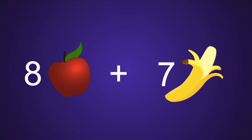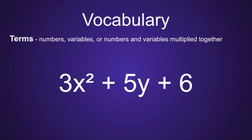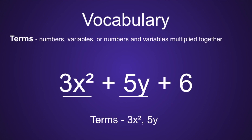Taking something that is separated or looks complex and combining the terms together to make a simplified expression. The first vocabulary term is terms. Terms are numbers, variables, or numbers and variables multiplied together. So in the expression 3x squared plus 5y plus 6, there are 3 terms: 3x squared, 5y, and 6.